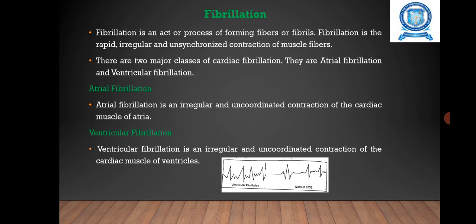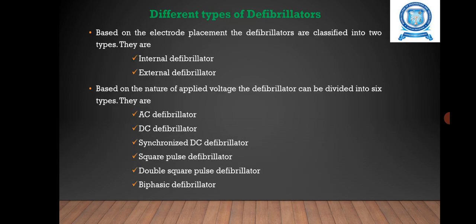The next one is ventricular fibrillation. It is an irregular and uncoordinated contraction of the cardiac muscles of the ventricles. It is a common cause of cardiac arrest and is usually fatal if not reversed by defibrillation. It is the most frequently encountered problem in patient monitoring systems.